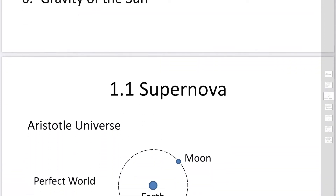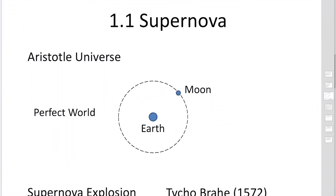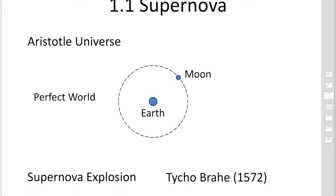We start with the supernova explosion. Before Kepler's time, people believed in the Aristotle universe. In the Aristotle universe, the universe is divided into two worlds: the perfect world and the imperfect world. The two worlds are divided by the orbit of the moon. Outside of the orbit of the moon, the perfect world exists, and in the perfect world, a thing cannot be broken.